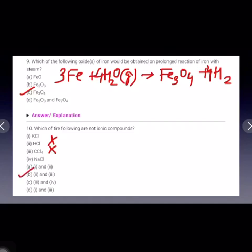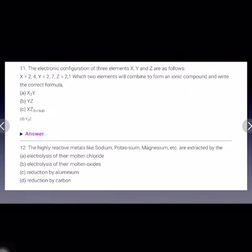These are not ionic compounds. The rest, KCl and NaCl, they are. The 11th question is: the electronic configuration of three elements are given. Which two elements will combine to form an ionic compound and write the correct formula?